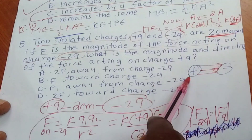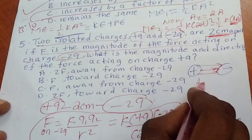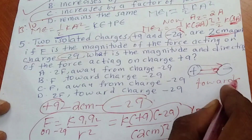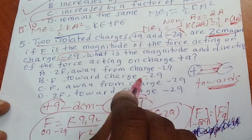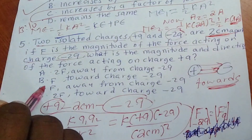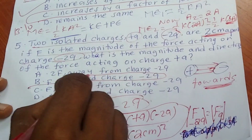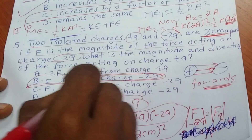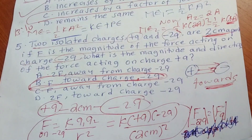The direction: positive charges and negative charges attract each other. So the force on positive q is directed toward negative 2q. Therefore the force is F, directed towards negative 2q.